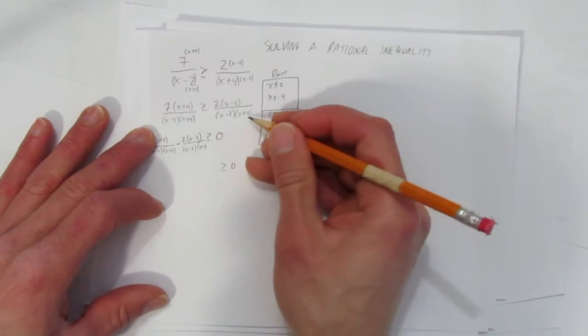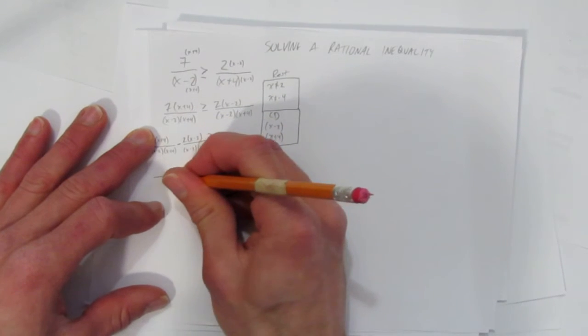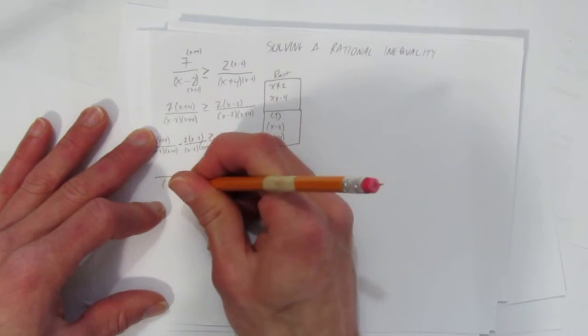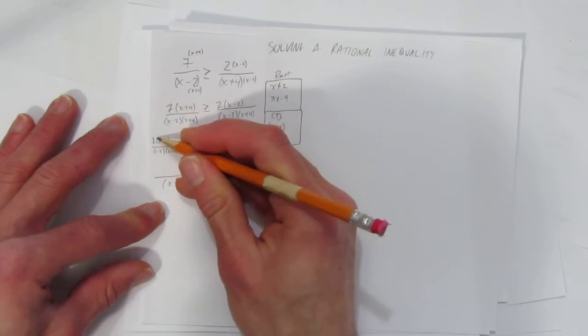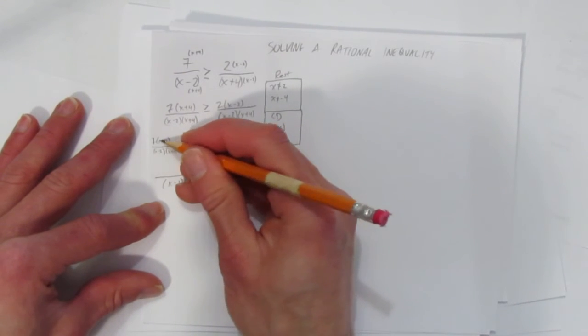I'll give myself a little more room on the next line. So now I have this common denominator, and I moved it all to one side, so I can write it as one big fraction: x minus 2 x plus 4. And I can start to expand, or rainbow here.